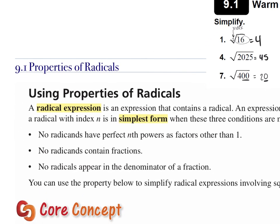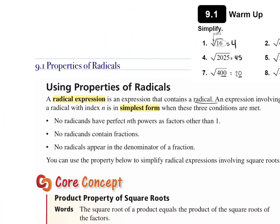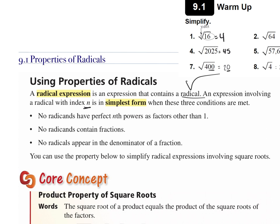This entire chapter involves radicals, so we're going to be dealing with radicals a lot. We're going to be using properties of radicals. The first thing we're going to learn about is a radical expression — that's any expression that contains a radical, which is this symbol. An expression involving a radical with an index n is in simplest form when three conditions are met. Label them 1, 2, and 3.